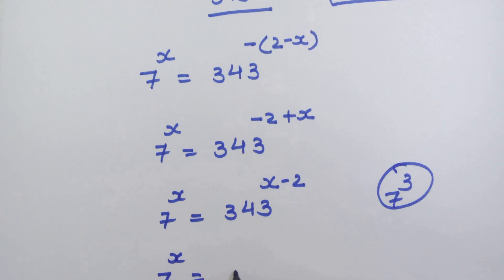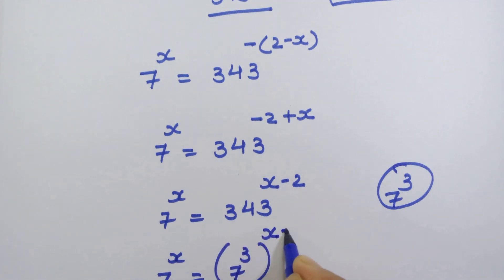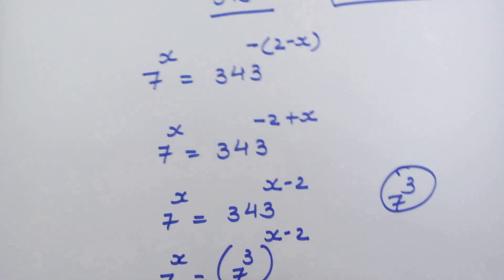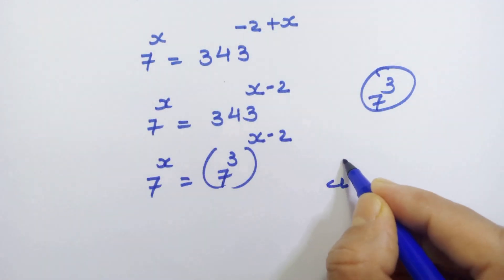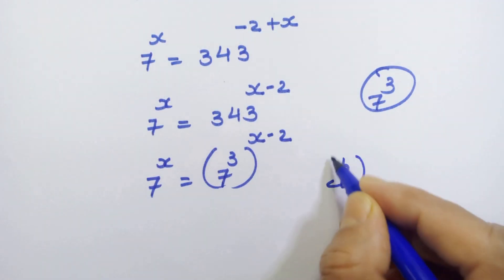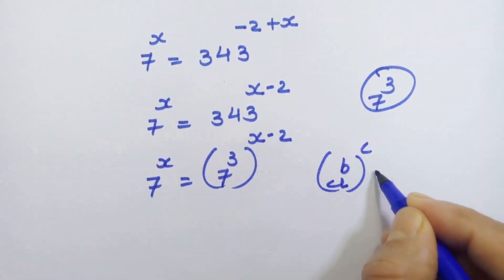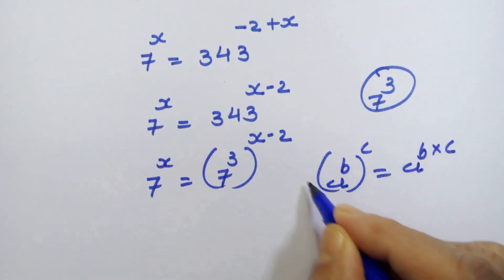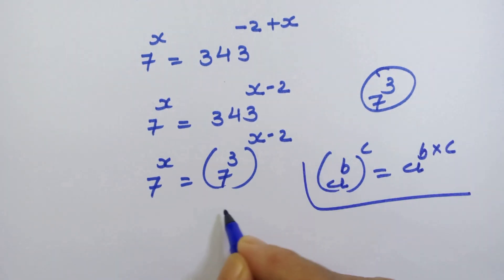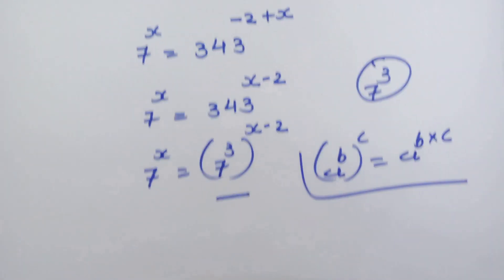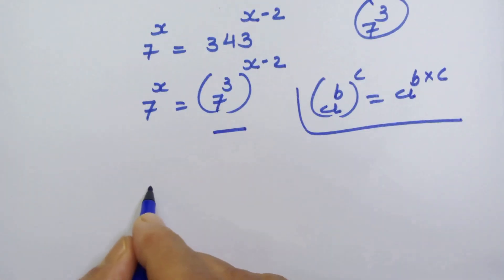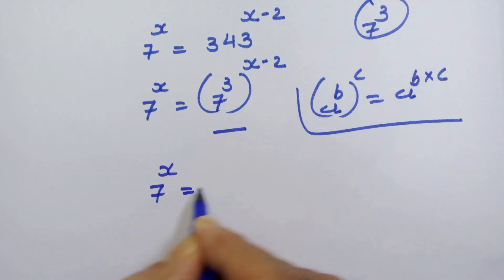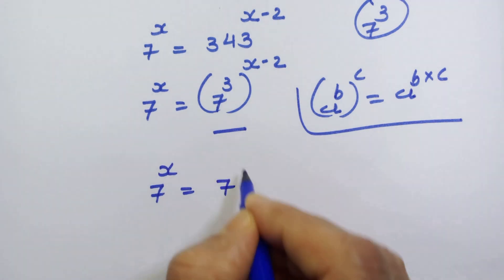So we have 7 raised to x is equal to 7 cube whole raised to (x minus 2). We know the rule: if we have a raised to b, whole raised to c, then we can write it as a raised to b into c. Using this rule, we get 7 raised to x is equal to 7 raised to 3 into (x minus 2).